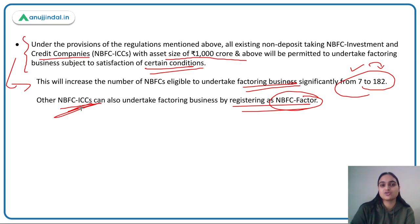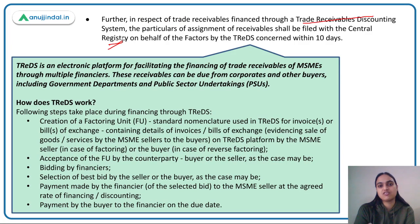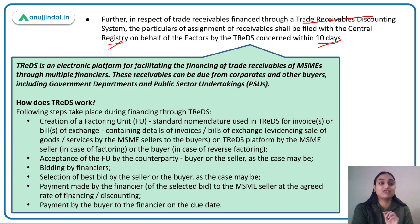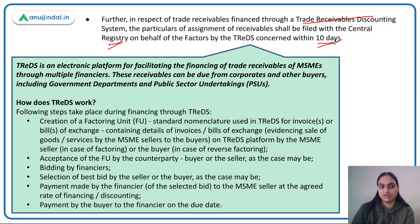The press release also mentioned that under the TREDS system, the Central Registry will be informed about the assignment of receivables by TREDS-authorized people on behalf of the factors within 10 days. Now, what is TREDS? TREDS stands for Trade Receivables Discounting System — an electronic platform which facilitates financing of trade receivables of MSMEs through multiple financers.